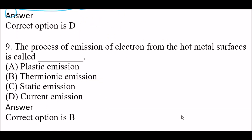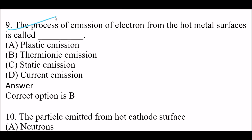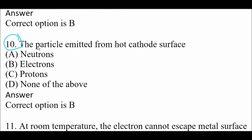Next question: the process of emission of electrons from hot metal surfaces is called — Option A: plastic emission. Option B: thermionic emission. Option C: static emission. Option D: current emission. Right answer is Option B — thermionic emission. Next question: the particles emitted from a hot cathode surface — Option A: neutrons. Option B: electrons. Option C: protons. Option D: none of the above. Right answer is Option B — electrons.